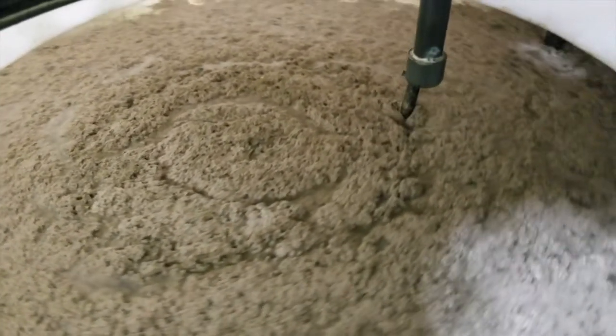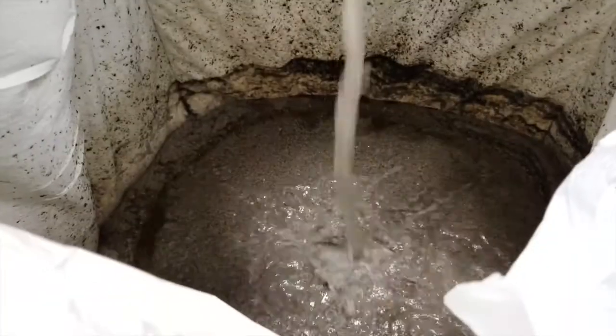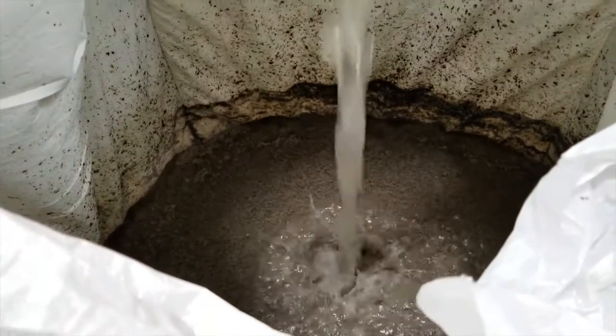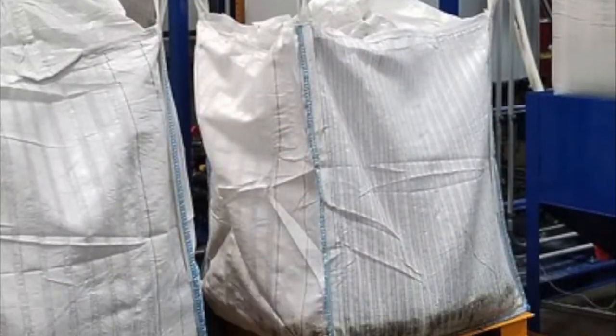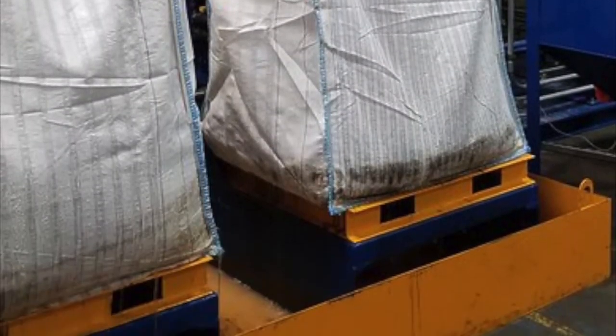Agitate until a large popcorn flock is produced, then simply fill your super sacks with your flocked treated water. It will then filter out your clean, discharge-ready water into the containment.